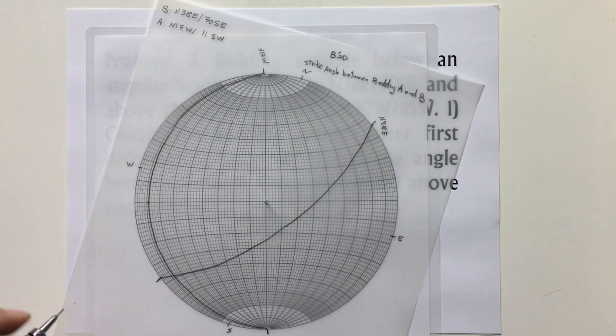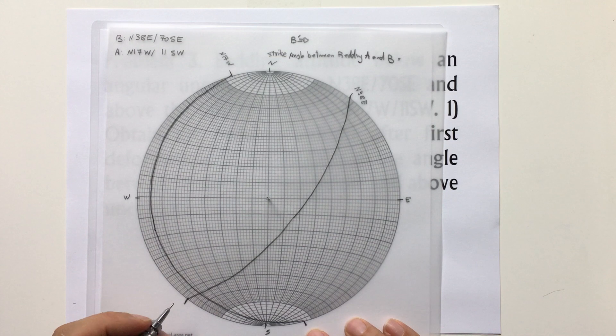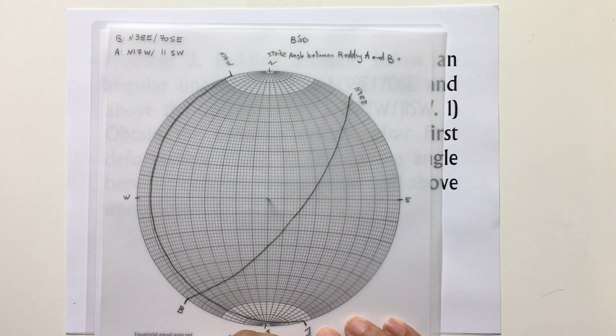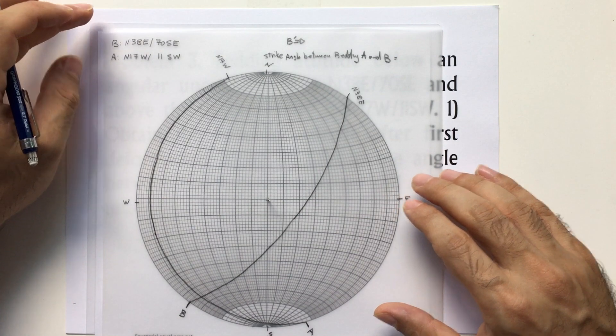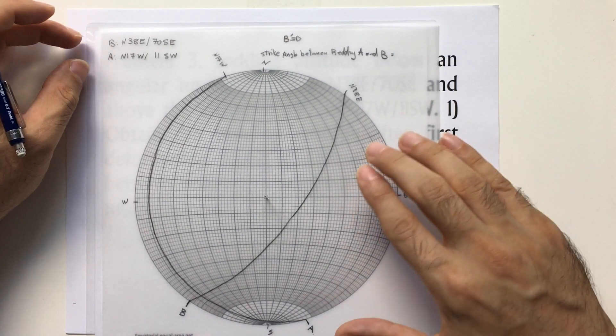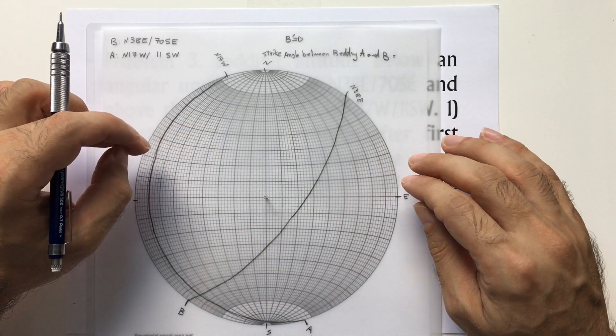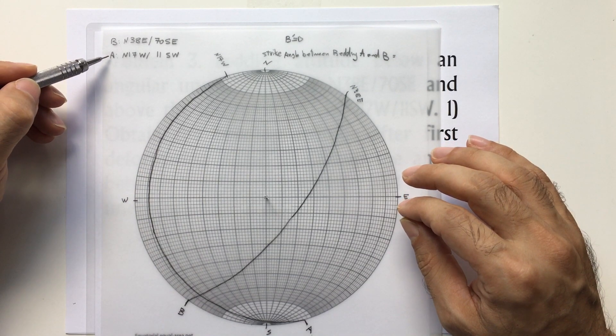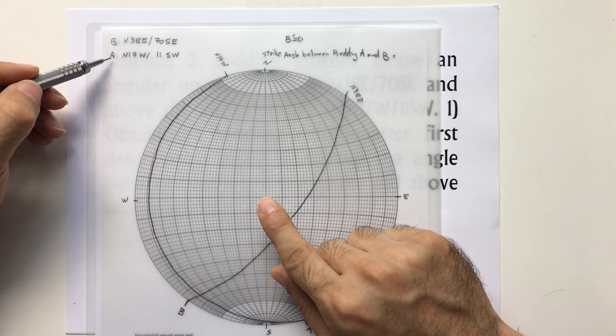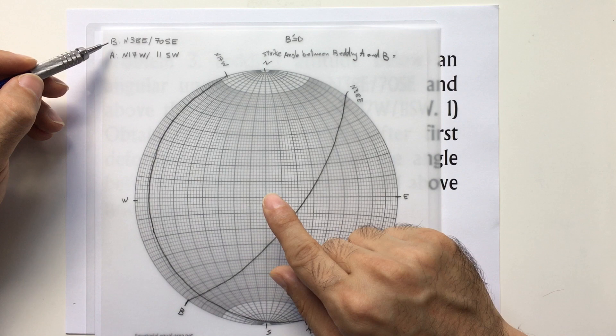This is A, and this is B. So what we're going to do to remove the second phase, the effect of the second tectonic phase, we need to find the pole of the beddings and then move the pole of A to the center and move the pole of B at the same direction, at the same angle size, and find the new pole.